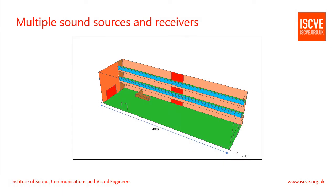So far we've been talking about a single sound source and a single receiver, but what about when you have multiple sound sources and more than one receiver in a room? Here we have a typical atrium area with two balcony levels. To give you a sense of scale, the width of the atrium is approximately 40 metres. Let's put two receivers in the space at 0.1 and 0.2, and then one loudspeaker which is at A1, located close to receiver 0.1. If we run the simulation, we get for this space an SPL of 69 dBA and 0.57 STI at receiver 0.1, and we also get 66 dBA and 0.41 STI at receiver 0.2.